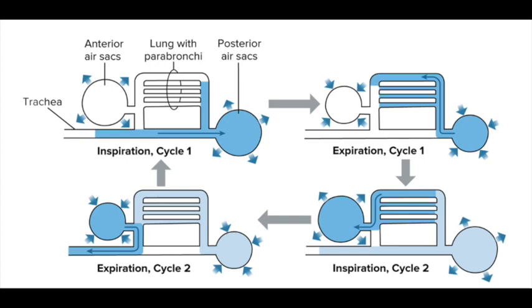During the second inspiration, fresh air enters the posterior air sacs and lungs again. The spent air in the lungs is displaced by incoming air but can't exit through the trachea because fresh air is flowing inward, so it enters the anterior air sacs. During the second expiration, the spent air in the anterior air sacs flows out through the trachea, and fresh air from the posterior air sacs enters the lungs for gas exchange. Birds require two breath cycles to complete one full respiration cycle.